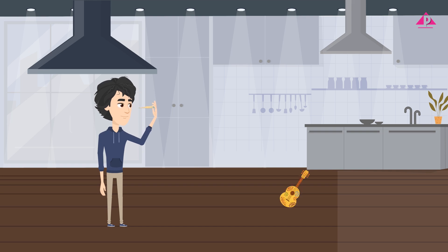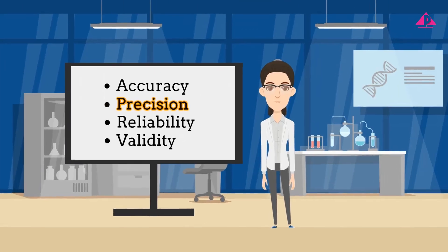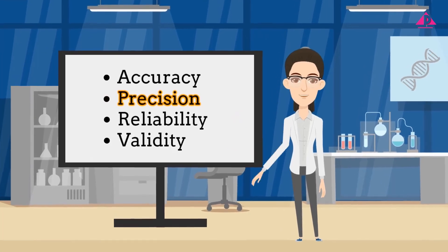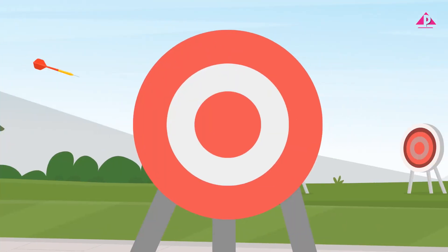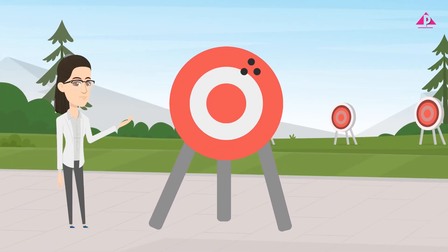Next up is precision. Imagine throwing three darts again. This time they all land really close to each other. That's precision. It doesn't matter whether or not they hit the bullseye. The key is they stick together. In science, precision means how close your measurements are to each other when you repeat them.